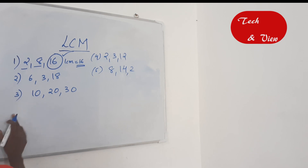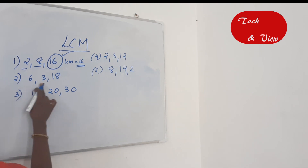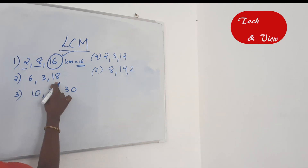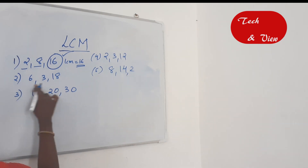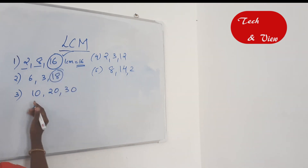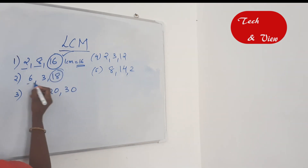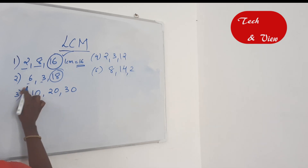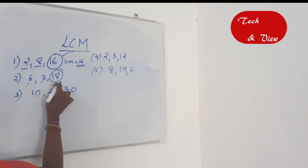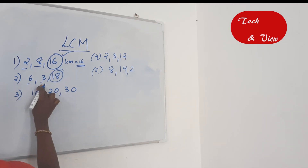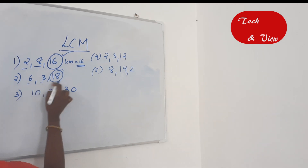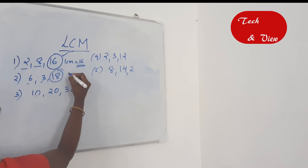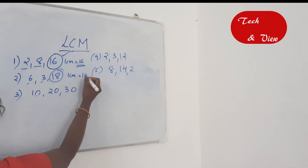Second question: 6, 3, 18. The largest number is 18. 18 divided by 6 is 3 — fully divisible. 18 divided by 3 is 6 — fully divisible. So LCM is 18.